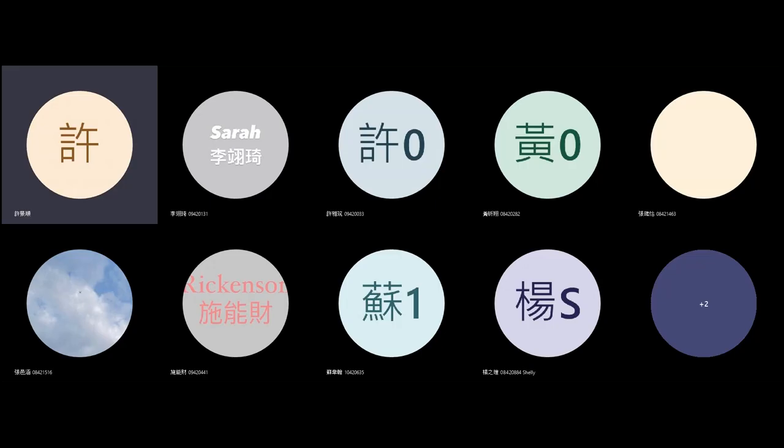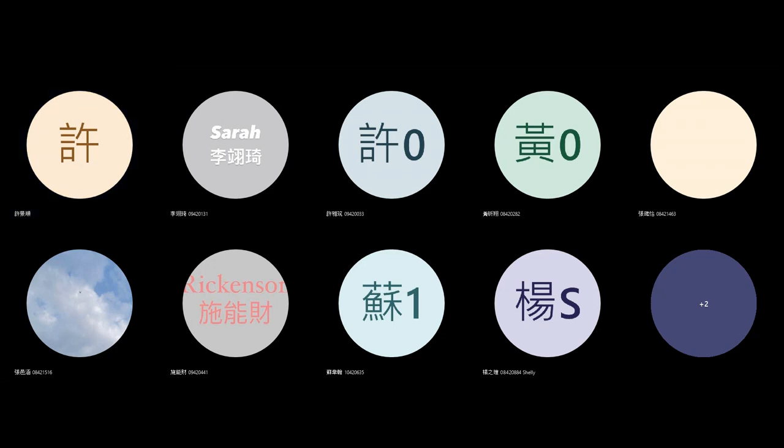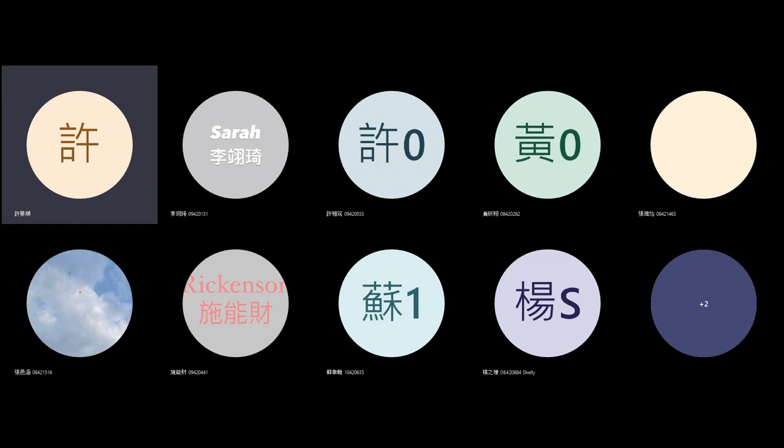Today we're talking about symbolism in film. Symbolism is the idea that some things have more than simply the functional meaning. In general, we can talk about universal symbols and personal symbols.